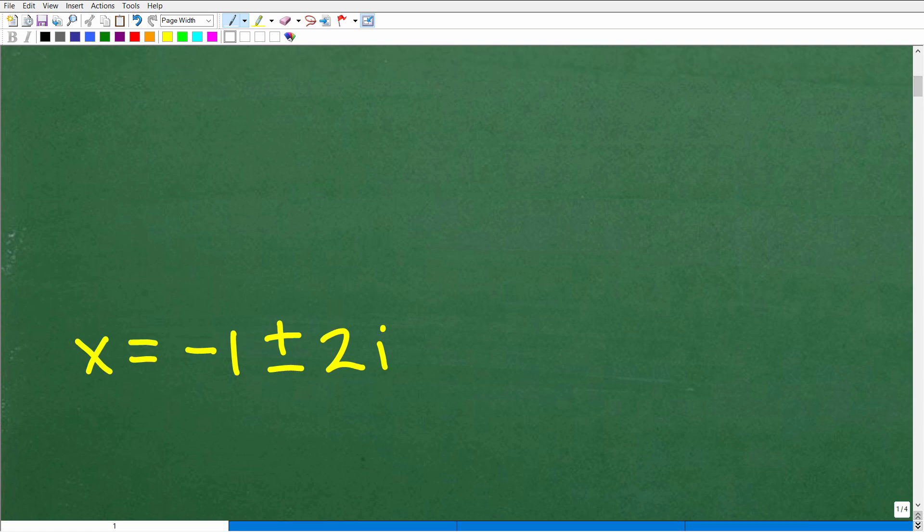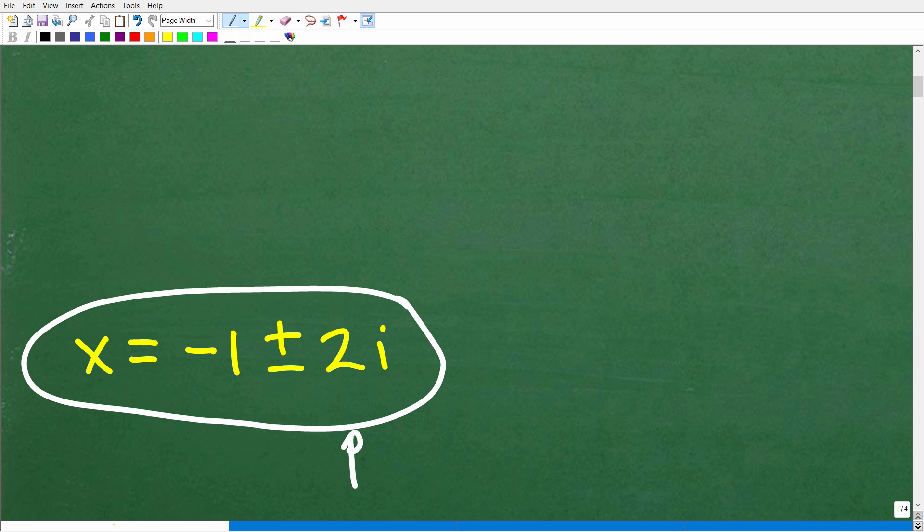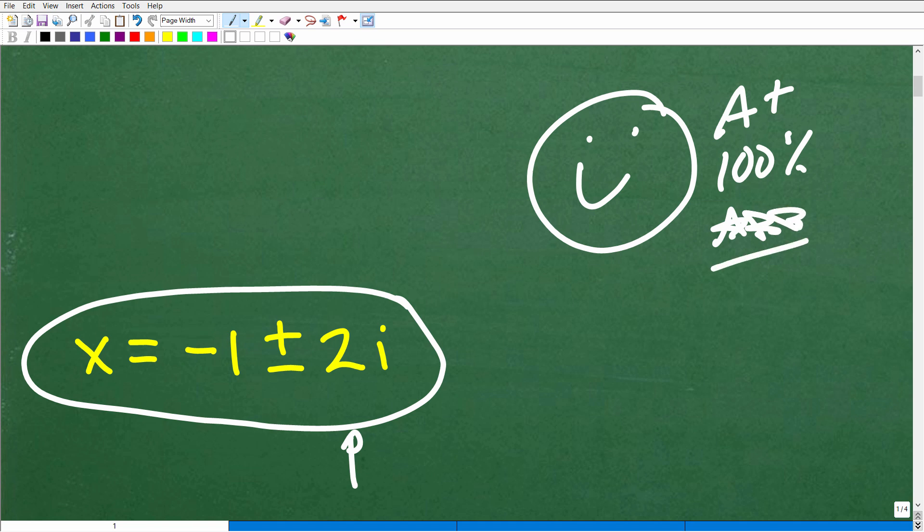And here it goes. x is equal to negative 1 plus or minus 2i. Now, if you don't know what this i is, what we're dealing with here is imaginary numbers or imaginary solutions or complex solutions, however you want to look at it. But this is the answer. Now, if you got this right without the aid of a calculator or anything like that, well, let's give you a nice little happy face, an A plus, a 100% and multiple stars so you can tell your friends and family that you know how to solve a quadratic equation with complex solutions. They would be really impressed with that. They might even take you out to lunch or dinner. You just never know, right?